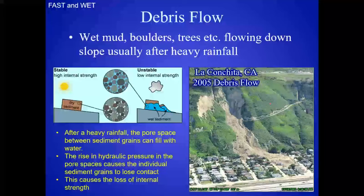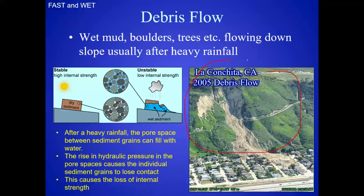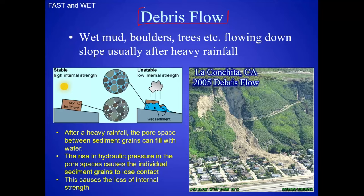I come from California, so debris flows are a big deal there — not so much here in South Texas because we don't have as much topography. In normal everyday language, we probably call this a landslide, but that's not really a scientific term. It's called a debris flow. A debris flow consists of wet mud, boulders, trees, etc., flowing down slopes, usually after a heavy rainfall.